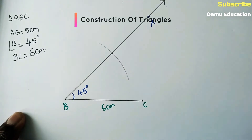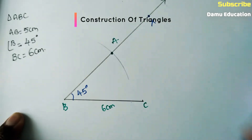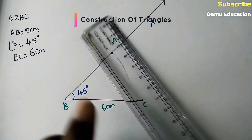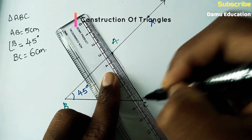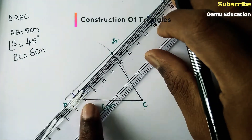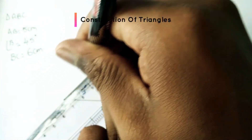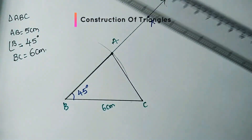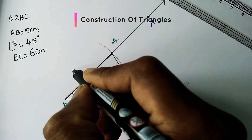Where the arc coincides with ray BX, name that point A. Now join A to C and A to B. The length AC can be measured, and AB will be 5 centimeters as required.